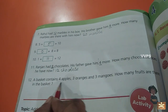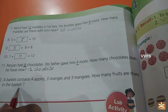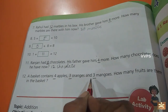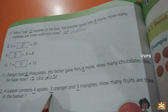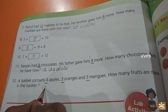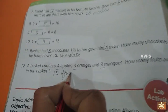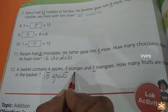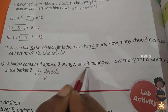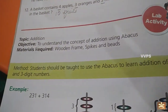Twelfth one: a basket contains 4 apples, 3 oranges and 3 mangoes. How many fruits are there in the basket? In a basket you have 4 apples, 3 oranges and 3 mangoes. So you have to add all three. 4 plus 3 plus 3 equals 10. Totally 10 fruits in the basket. Have you understood this lesson children? Addition. Okay children, thank you.